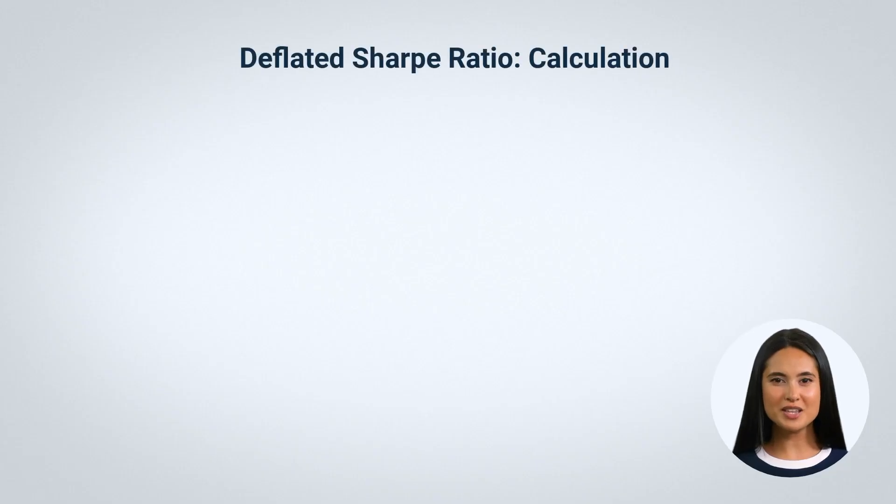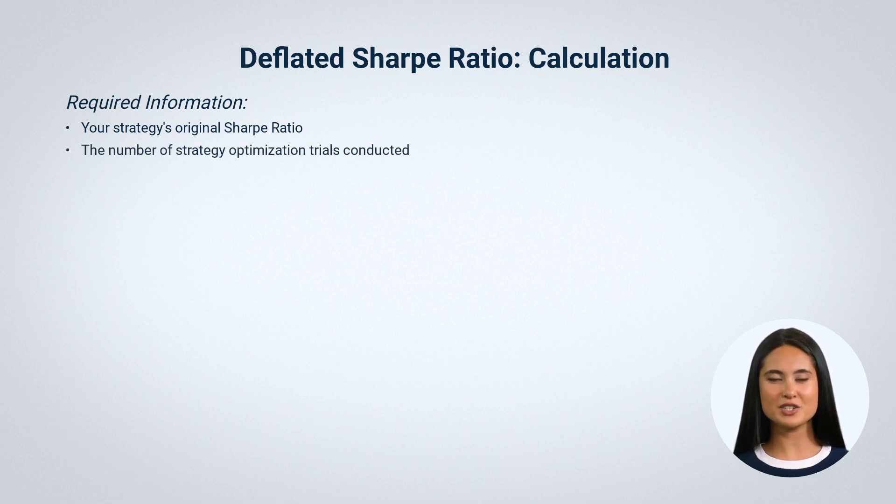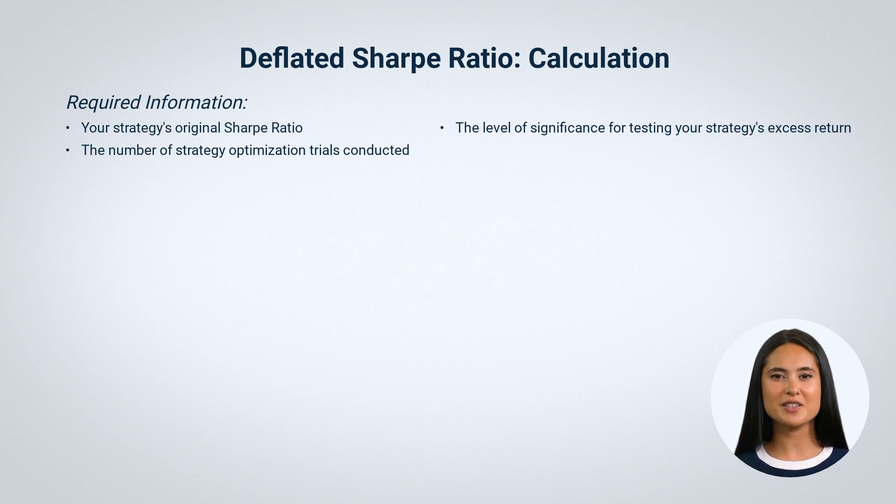You can calculate the deflated Sharpe ratio with four crucial pieces of information. First, you'll need the original Sharpe ratio of your strategy. Next, consider the number of optimization trials you've conducted for your strategy. The third piece is your chosen significance level for testing the excess return of your strategy. And finally, you should be aware of the skewness and kurtosis of your strategy's returns.